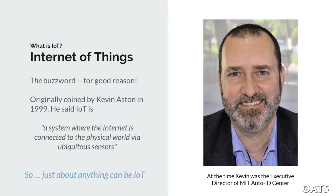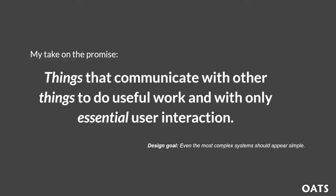I take that to mean just about anything can be IoT, and I think that's kind of true. But since 1999, I think the idea has evolved. My take on it is that IoT are things that communicate with other things to do useful work, and with only essential user actions. So basically, as long as whatever it is — a doorbell to a complicated computing system — can communicate with each other, does something useful, and does it without constant user interaction, then it's IoT. And a design goal within this framework is that complex systems appear to be a single simple system.